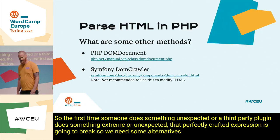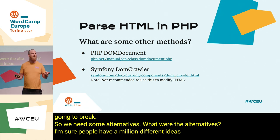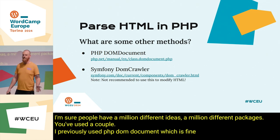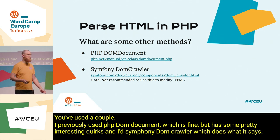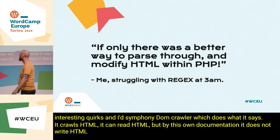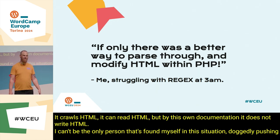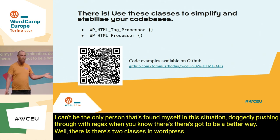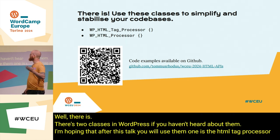We need some alternatives. I'm sure people have a million different ideas, a million different packages they've used. A couple I previously used: PHP DOM Document, which is fine but has some pretty interesting quirks; and Symfony DOM Crawler, which crawls HTML and can read HTML, but by its own documentation it does not write HTML. There are two classes in WordPress — if you haven't heard about them, I'm hoping that after this talk you will use them. One is the HTML Tag Processor, one is the HTML Processor. I'm going to refer to them as 'tag processor' and 'HTML processor' to give a little bit of separation.